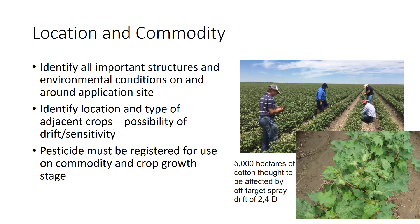Non-crop areas should also be inspected. The proximity of endangered species, wildlife areas, lakes, streams, ponds, wells, and irrigation canals to the application site can influence pesticide selection if the pesticide has the potential to harm organisms in these areas.